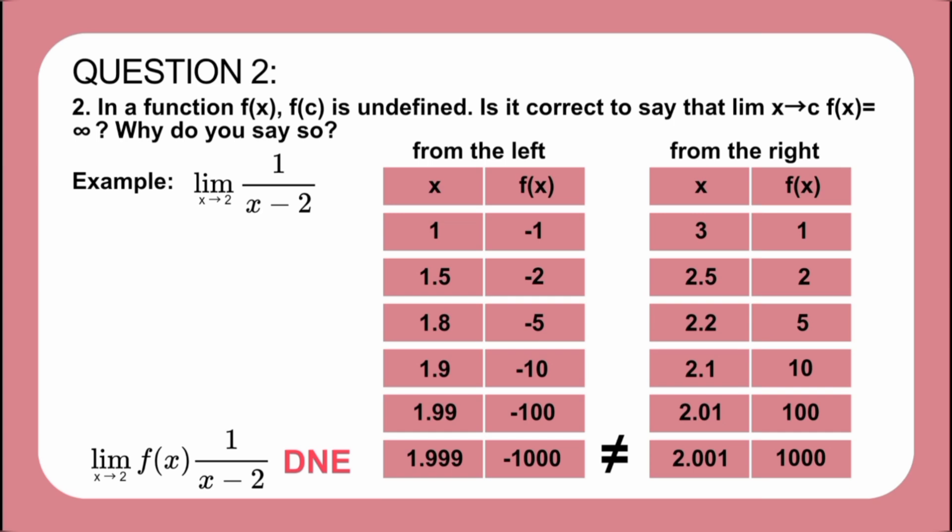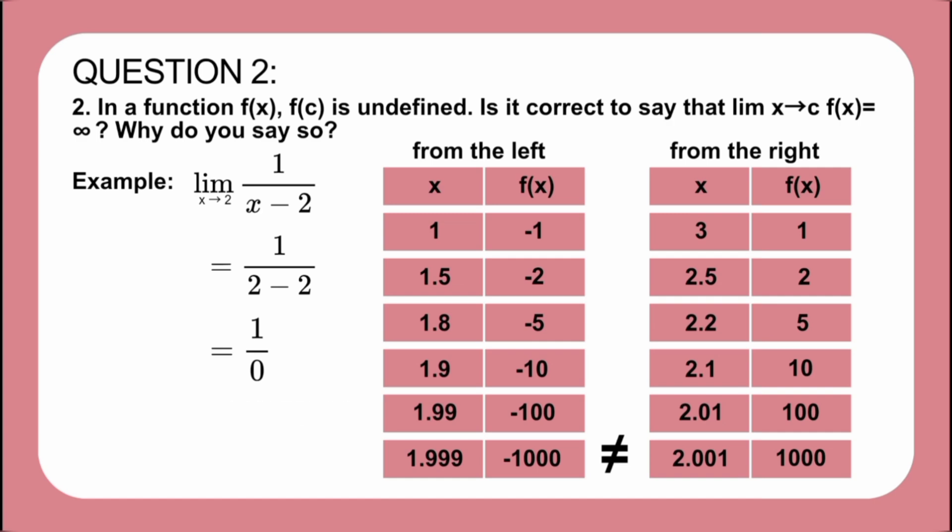It is also clear if we solve by substitution: we get 1 over 2 minus 2, which equals 1 over 0, which is undefined. So to answer our main question, is it correct to say that the limit of f of x as x approaches c is equal to positive infinity? The answer is no, because as seen from our example, if the equation is undefined, then the limit does not exist, making it impossible for it to equal positive infinity.